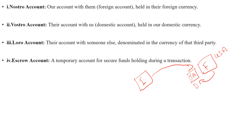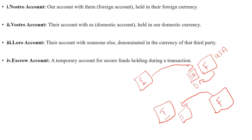Now for the Vostro account: consider an Indian bank and a foreign bank. Here, the foreign bank is opening an account with our Indian bank, and that account is maintained in Indian currency (Rupees). This is called a Vostro account. So Nostro is when our Indian bank holds an account abroad in foreign currency, and Vostro is when a foreign bank holds an account with us in our Indian currency.